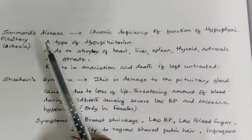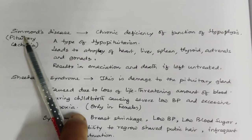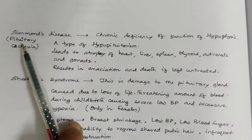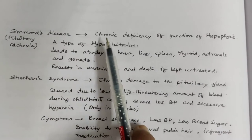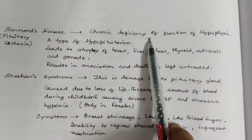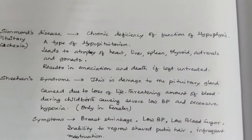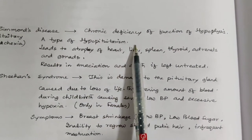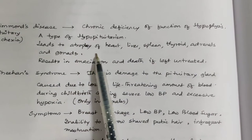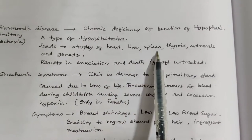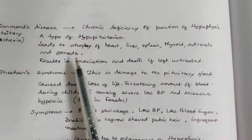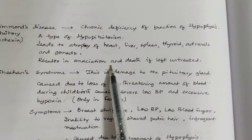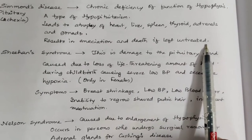Have you heard about Simmonds' disease? It is also known as pituitary cachexia. It is a chronic deficiency of function of the hypophysis — a type of hypopituitarism. It leads to atrophy of the heart, liver, spleen, thyroid, adrenals, and gonads, resulting in emaciation and death if left untreated.